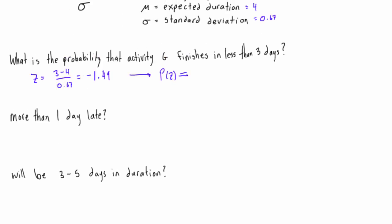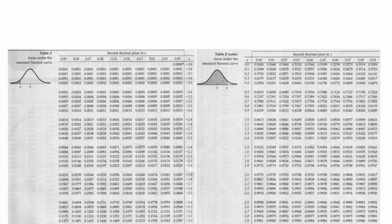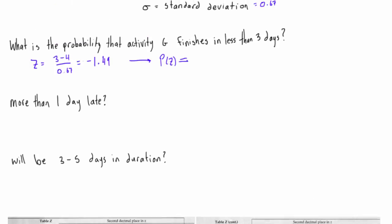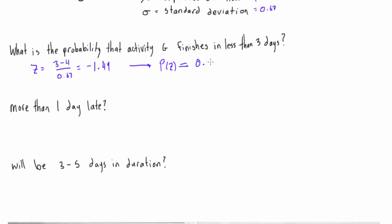We're looking for the probability of the z-score for negative 1.49. We find negative 1.4 and then 0.09 — combining those gives us negative 1.49, which is the z-score we have. We see where these meet up and the probability given is 0.0681.